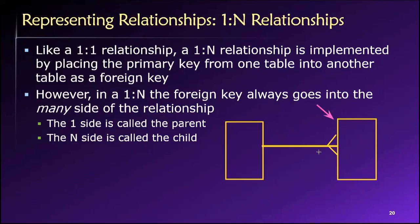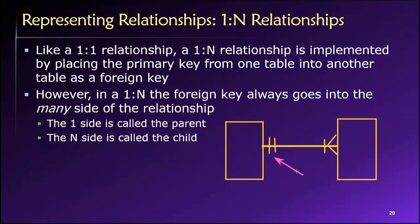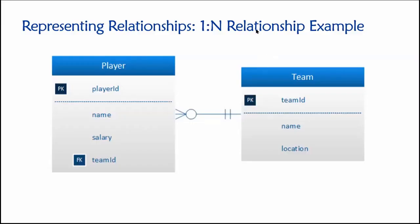So the one side is the parent and the many side is the child. We could fill this out with additional details — maybe this is one and only one here and one to many over there. Remember, we make that determination based on the maximum cardinality. The maximum cardinality here is one, maximum cardinality there is many, therefore this is the many side. Here we see an example: a player and a team — maybe a softball team or tennis team — and we can keep track of those relationships using a design like this.